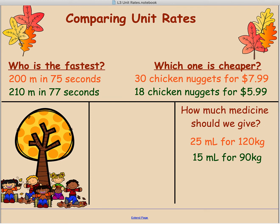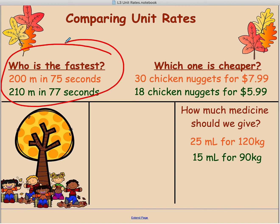One of the reasons we use unit rates is to compare things. So let's look at: who's the fastest? We have two different distances and two different times, so we can't just look at them and say 200 is smaller than 210 and 75 is smaller than 77 seconds. That doesn't work. What we do is convert each of them into unit rates.